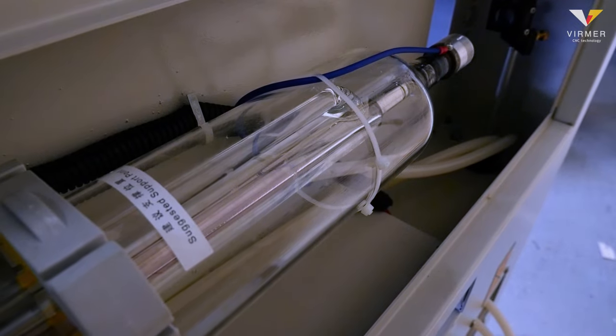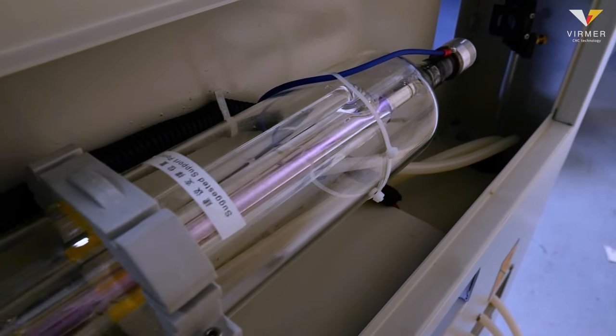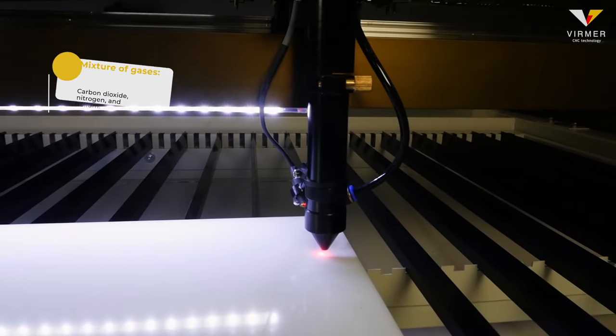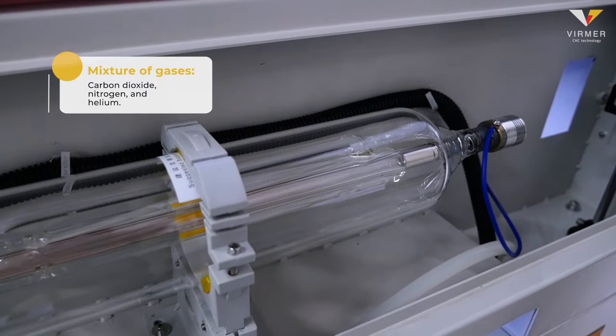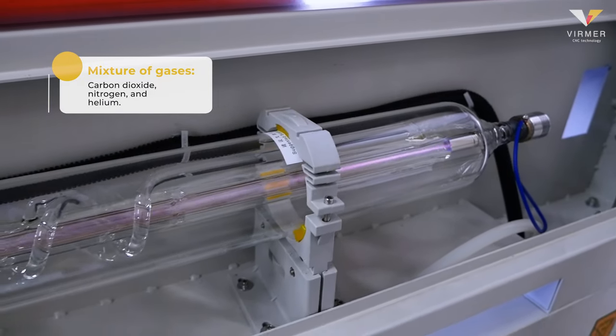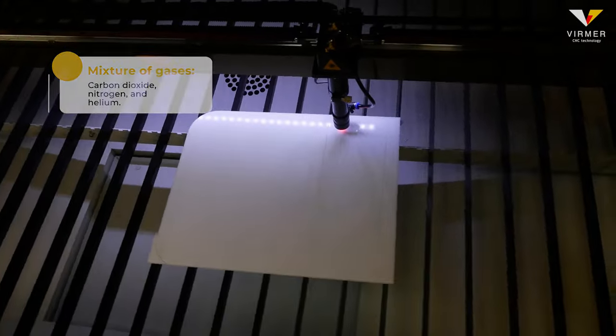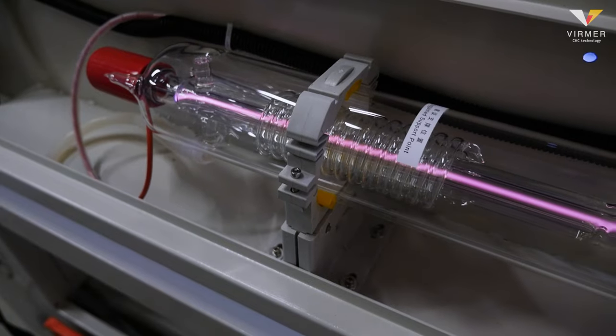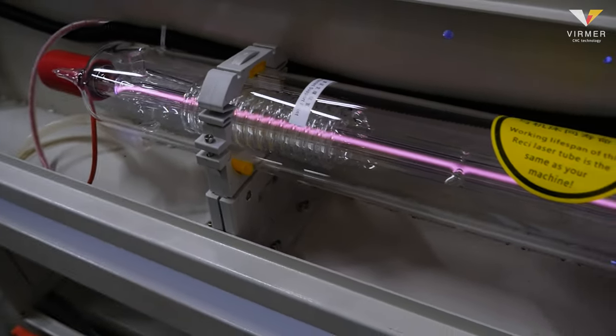And now in simpler terms, a CO2 laser machine has a laser tube. Usually, it is a glass bulb with a mixture of gases: carbon dioxide, nitrogen and helium. The machine supplies electrical energy to the laser tube, which is converted into laser radiation precisely due to a mixture of gases, mainly carbon.